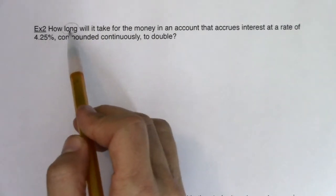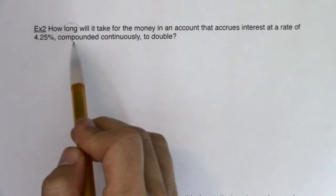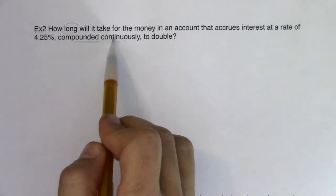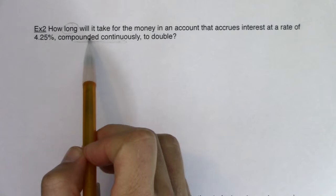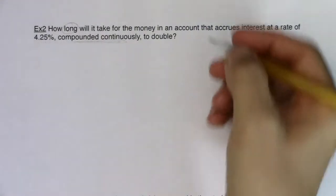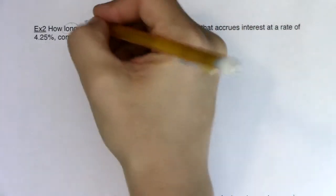All right, so I hear how long, so they're gonna ask me for a time value. I hear continuously compounded, so that's indicating that I'm gonna use the PERT formula. All right, and then I want it to double. And I mentioned this in example one, but it's worth repeating.